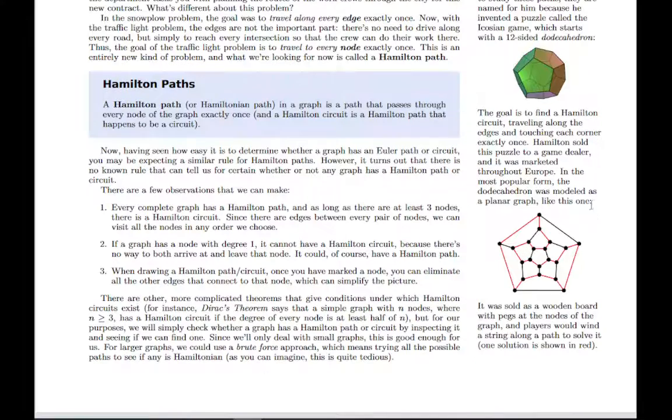So for example, you can see over in the margin here there's an example of a game that was used, that was built using this idea, and the red edges are the ones that are used in the Hamilton path. The black edges don't get used. So a Hamilton path doesn't use every edge potentially, but the goal is to pass through every node exactly once.